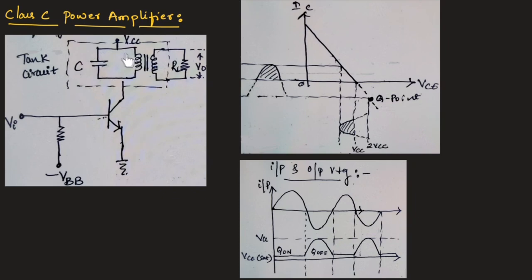This is the circuit of class C power amplifier, where at the collector side, a tuned circuit is connected with the combination of C and L. This is the tank circuit, where across the load resistor, we will be measuring the output voltage.